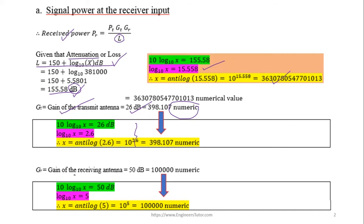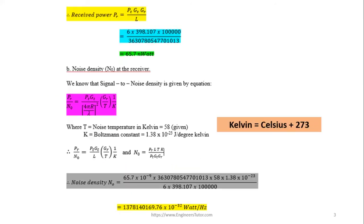After substituting all numerical values into the Friis equation, we get the received power equal to 65.7 nanowatts.